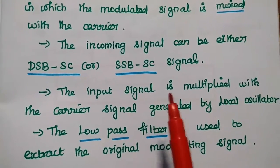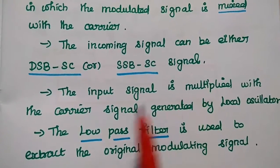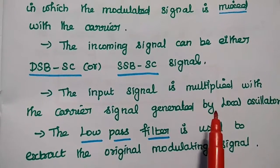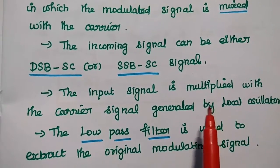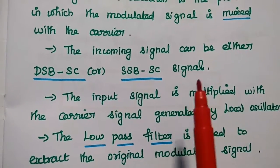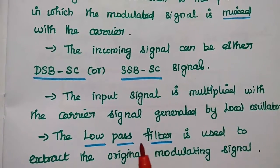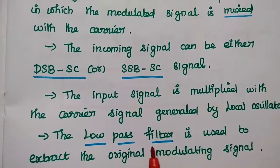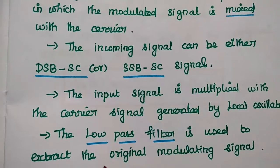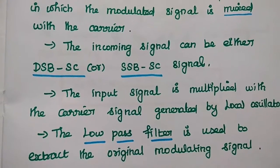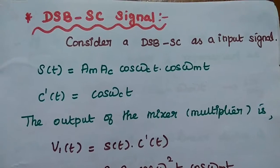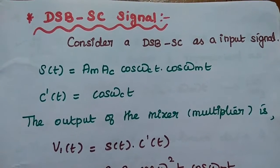The input signal is multiplied with the carrier signal generated by the local oscillator. The output of the multiplier or the mixer is given as input to the low pass filter. The low pass filter is used to extract the original modulating signal.